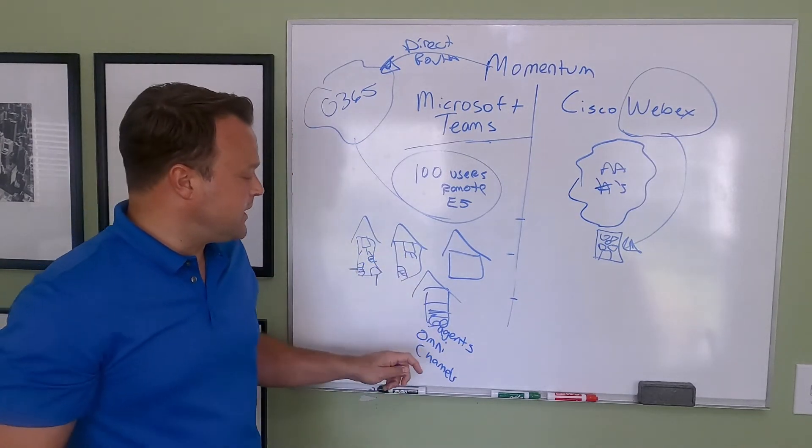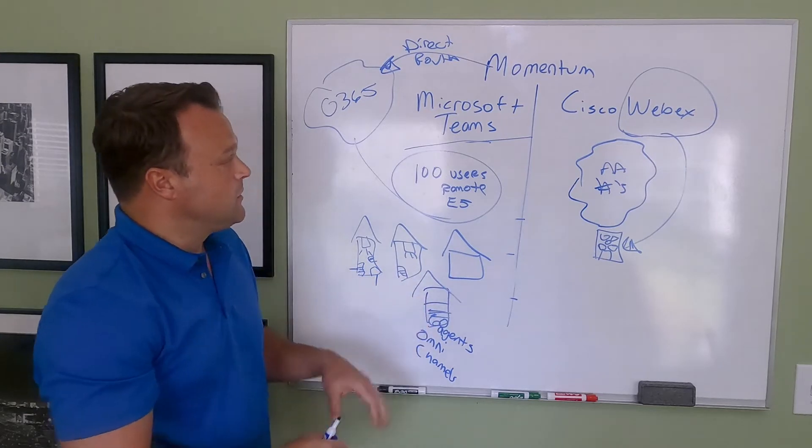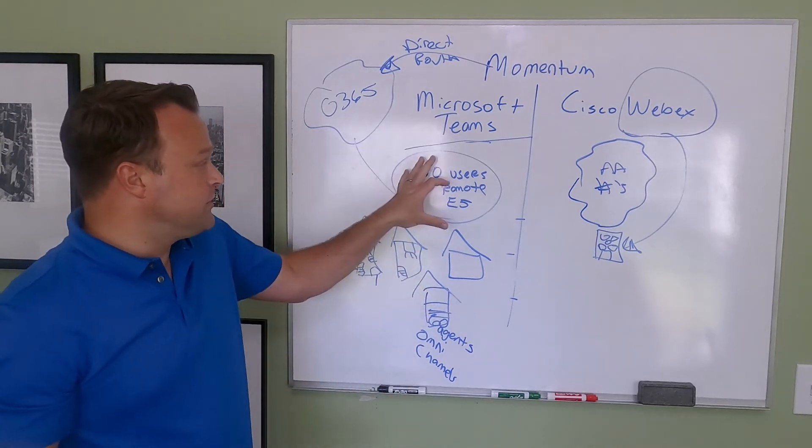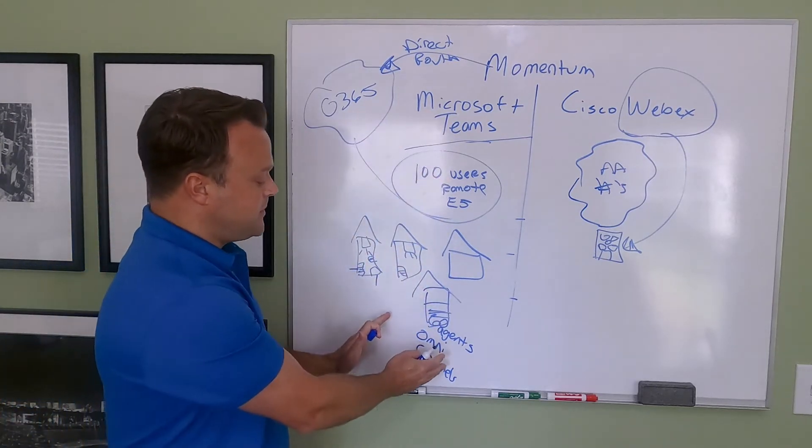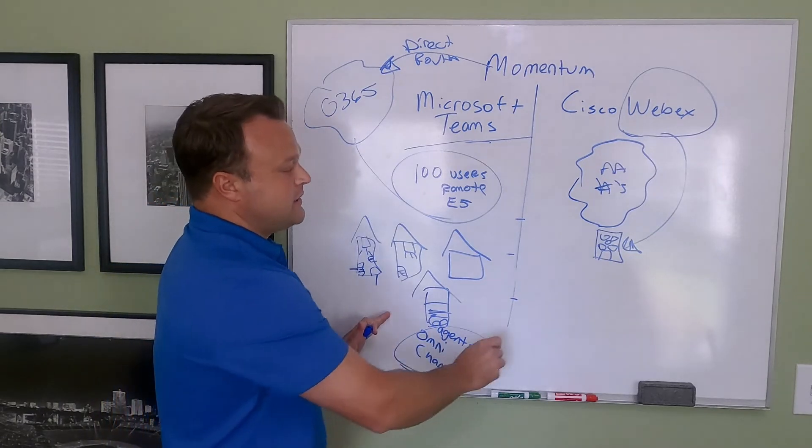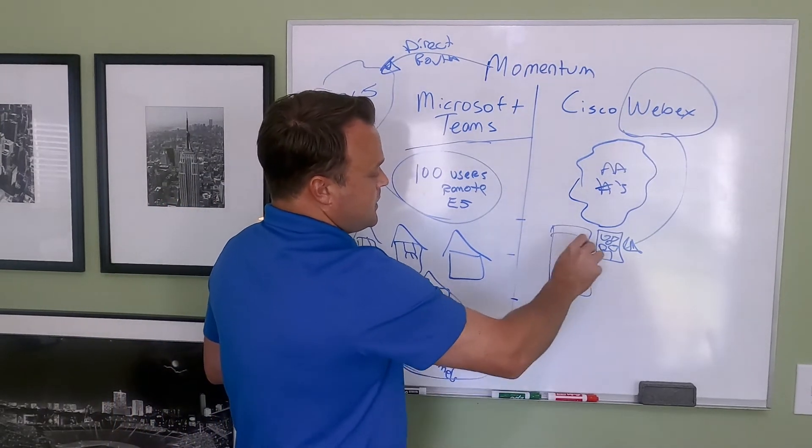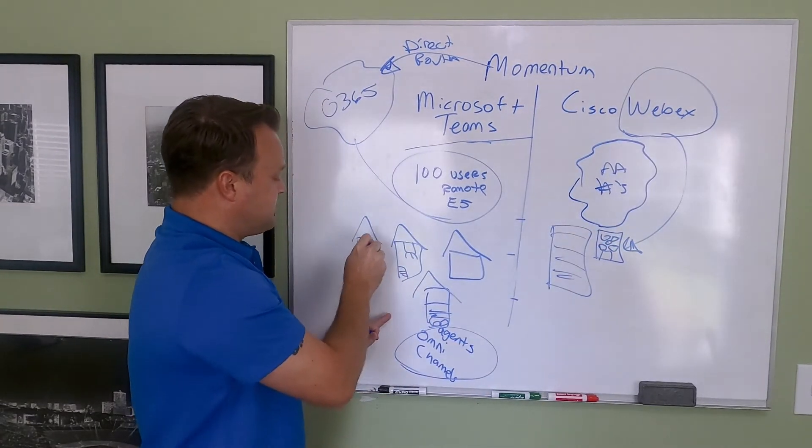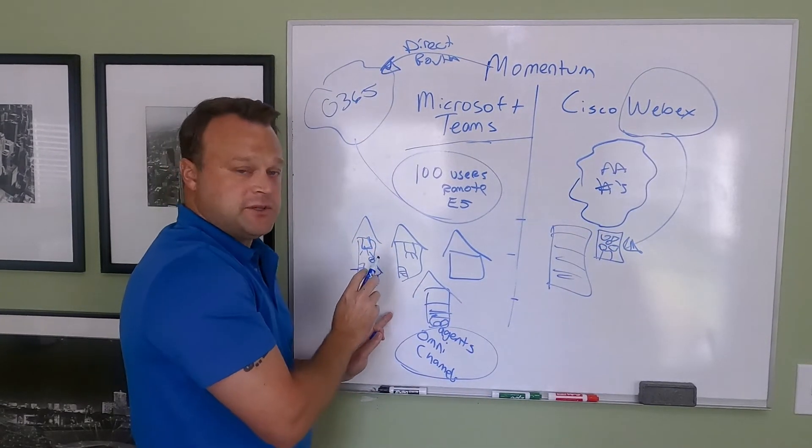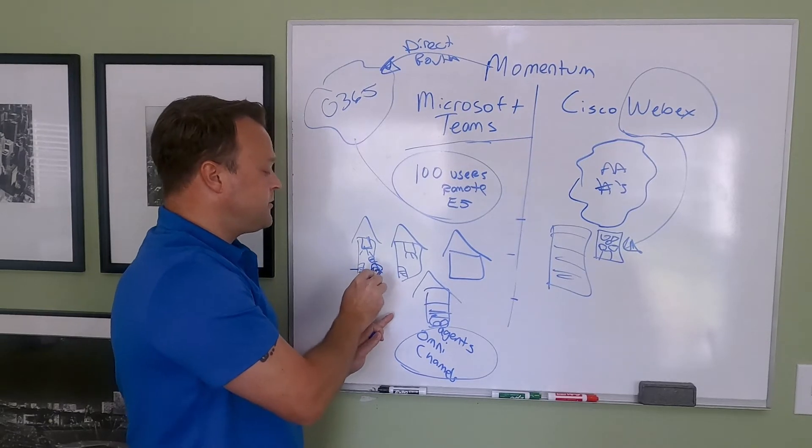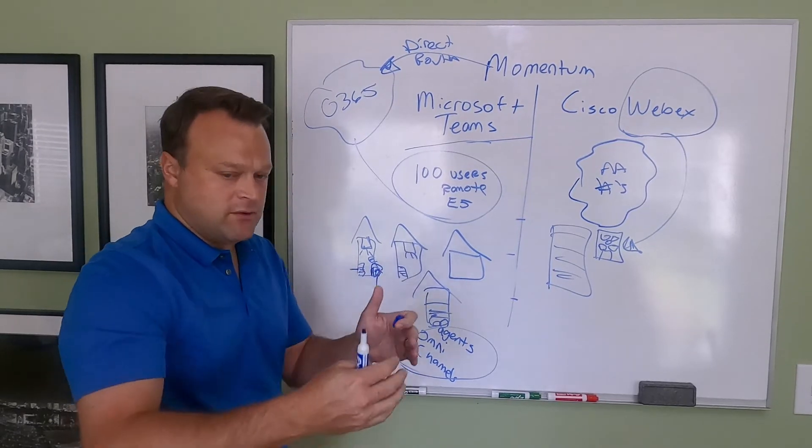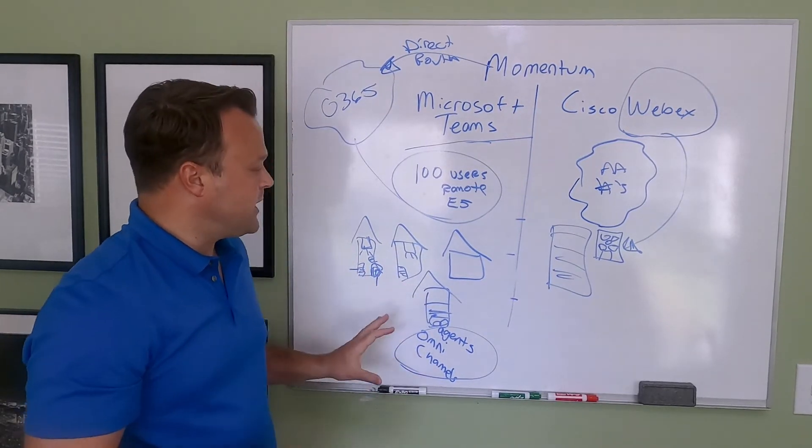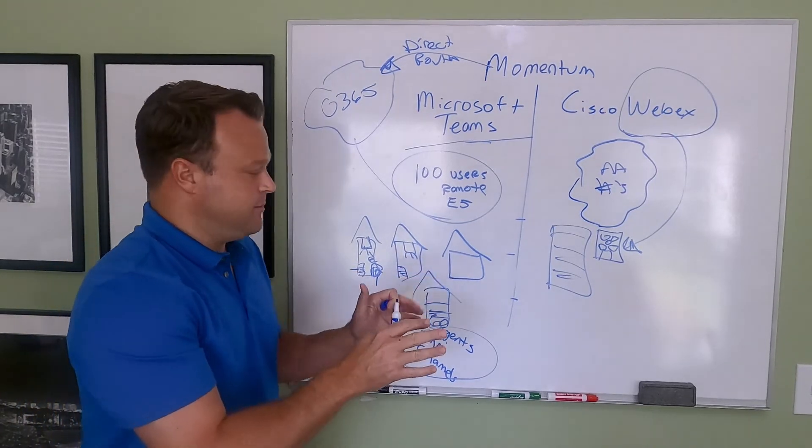You want omni-channel and you need screen recording and all the different things you'd find in a call center. Well, you're going to find a hard time servicing all these other needs with Microsoft Teams. But you've got 100 users it works great for. With Momentum, we can build your contact center over here within our infrastructure. We can provide you the overhead paging. We can provide common area phones, retail phones at a very low monthly price. It's a hybrid environment.